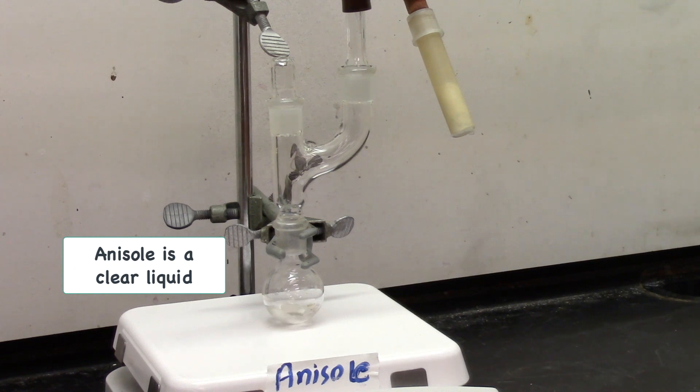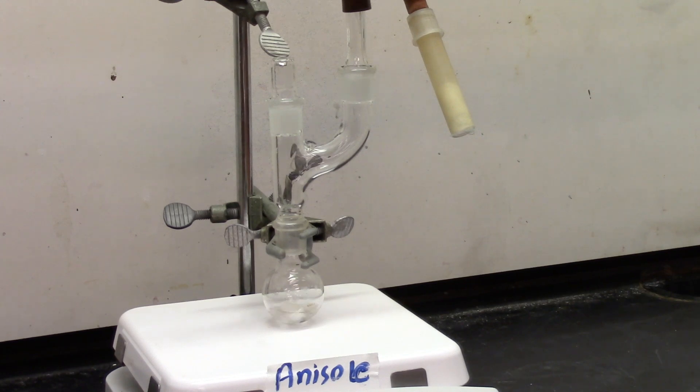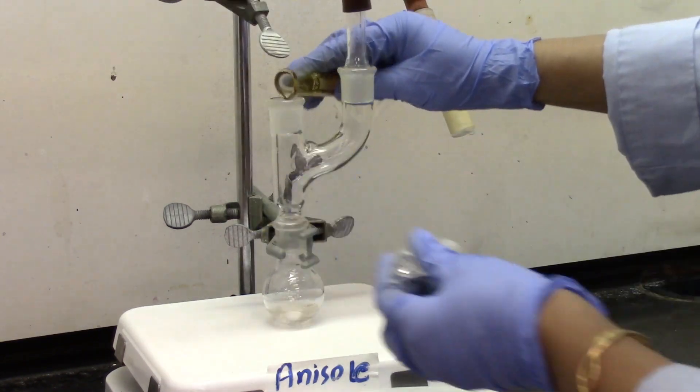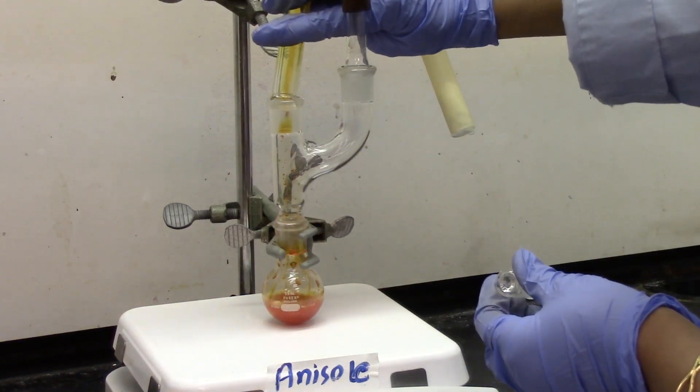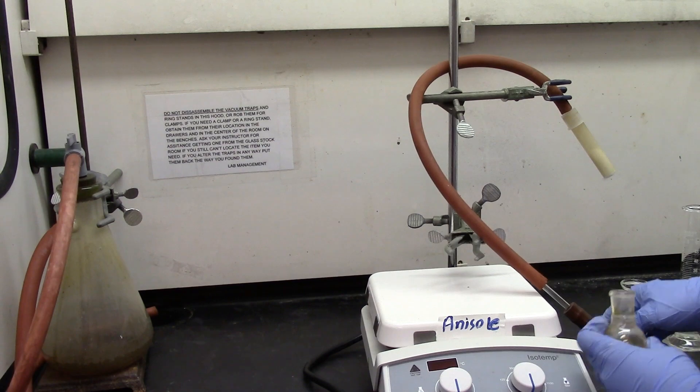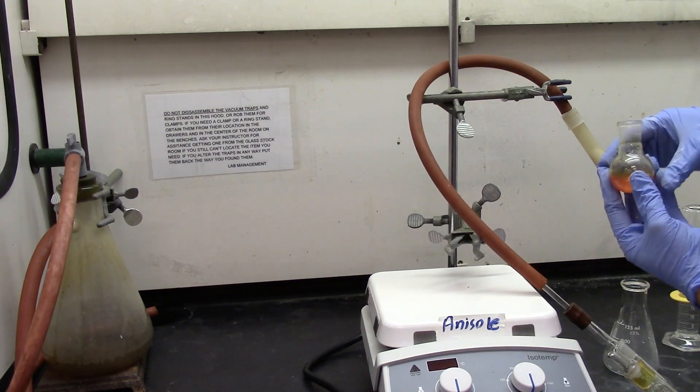So this is my anisole reaction where anisole is stirring with the glacial acetic acid. Now I'm going to add my 5 ml of bromine HBr mixture. The anisole would be stirring for about 30 minutes. It takes a little longer to react compared to aniline and acetanilide.